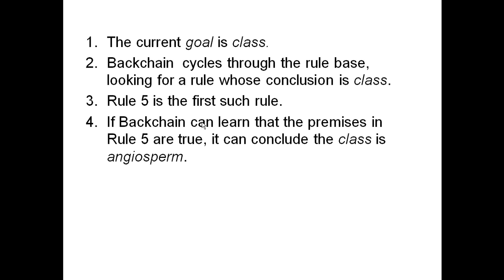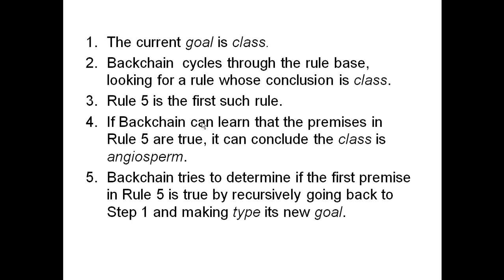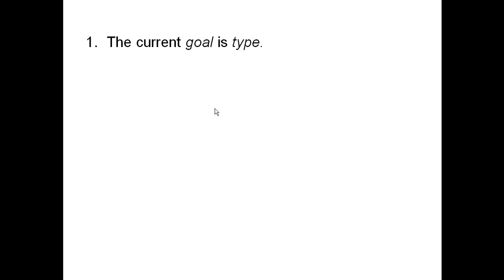If backchain can learn the premises are false, it can know to give up on that rule. Backchain tries to determine if the first premise in rule five is true by recursively going back to step one and making 'type' its new goal. Now type becomes our goal.